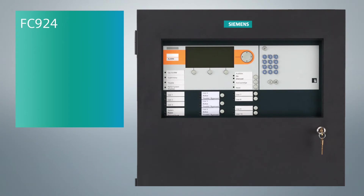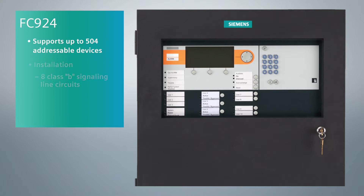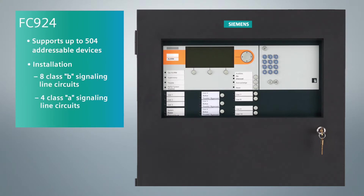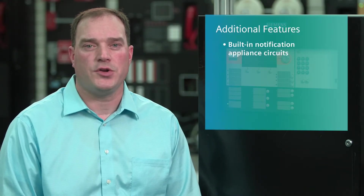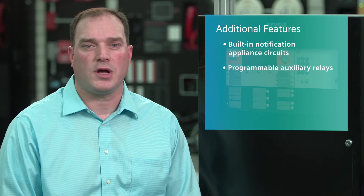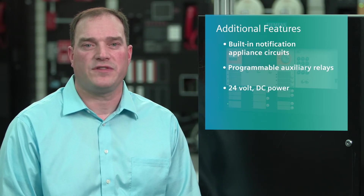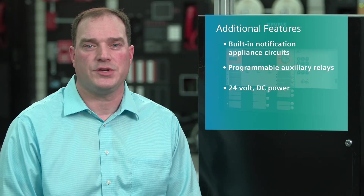The second version, model FC924, will support up to 504 addressable devices which can be installed on eight class B SLCs or four class A SLCs. Additional features include built-in notification appliance circuits, programmable auxiliary relays, and 24-volt DC power.